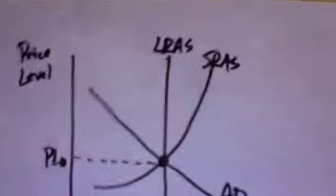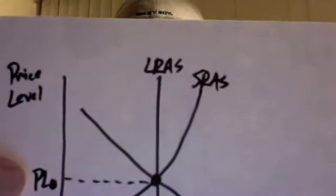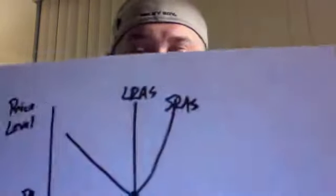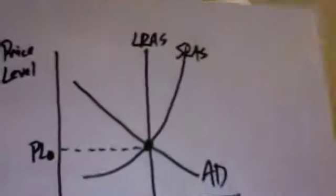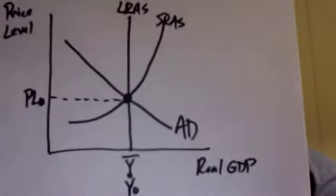So Y-bar equals Y0 — our actual GDP corresponds with our potential GDP. We also want to mark over to the Y-axis and label that PL0. That's going to be the price level for the economy at that point. There's the economy according to the aggregate demand and aggregate supply model operating at capacity with no GDP gap.